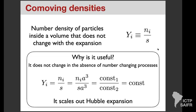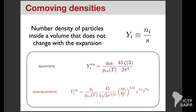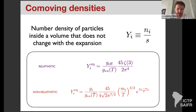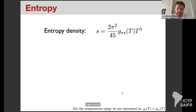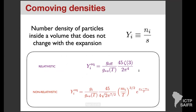Jenny asks: what is the meaning of the equilibrium comoving density and at what time? It is actually a function of temperature — there is g★S and T appearing in the expression — and temperature and time are related by the Friedmann equation. So I give it as a function of temperature, and if you want it as a function of time, you just use that equation to convert.